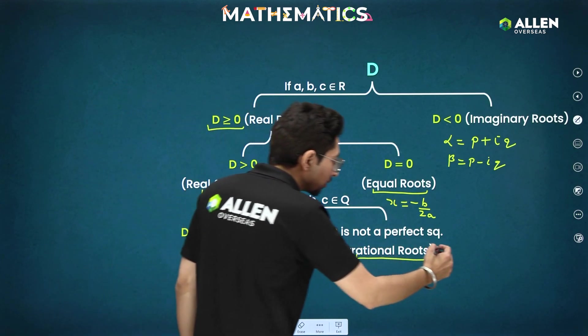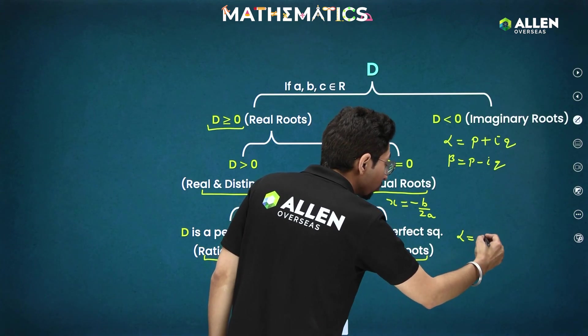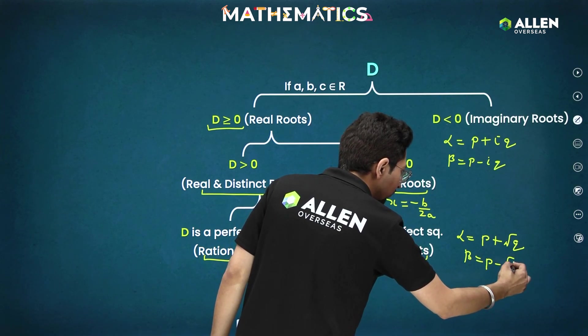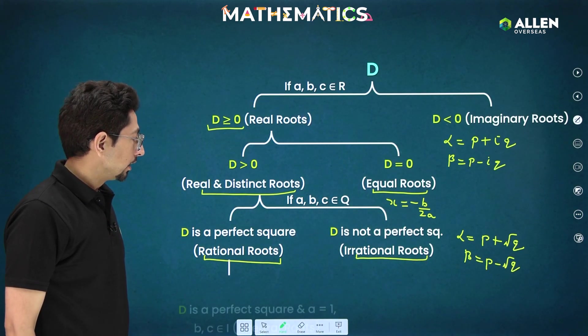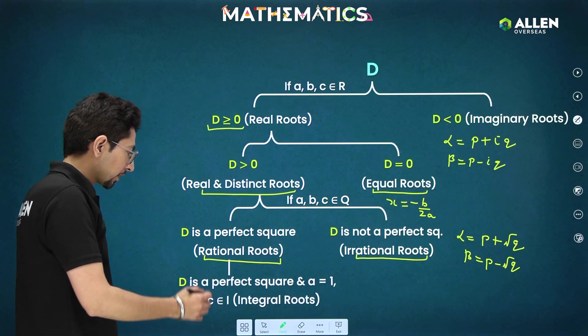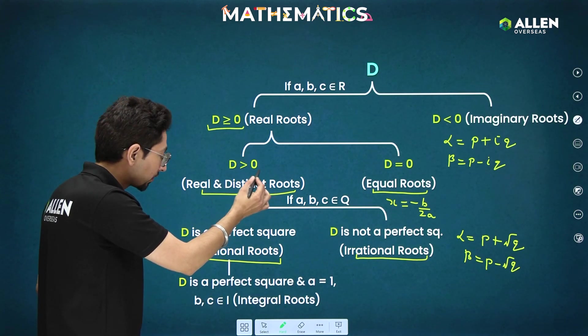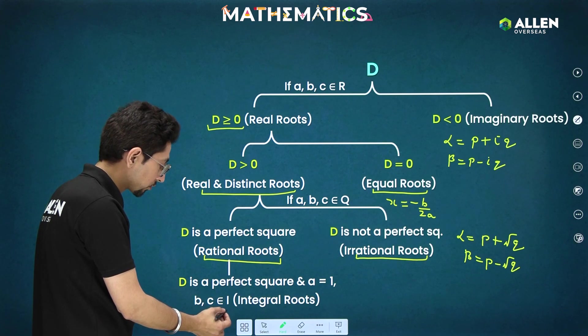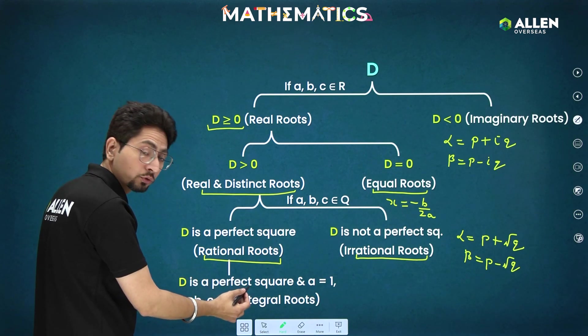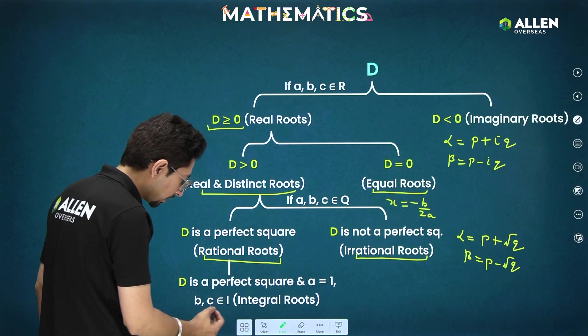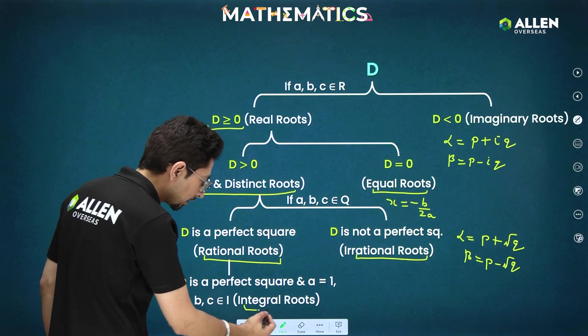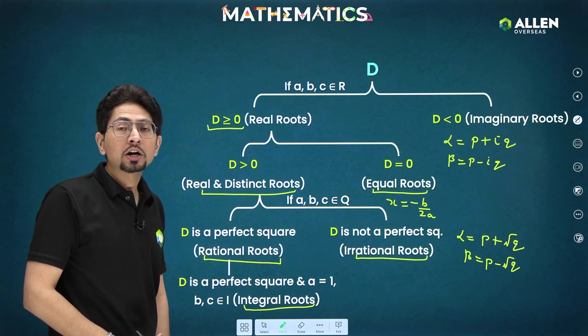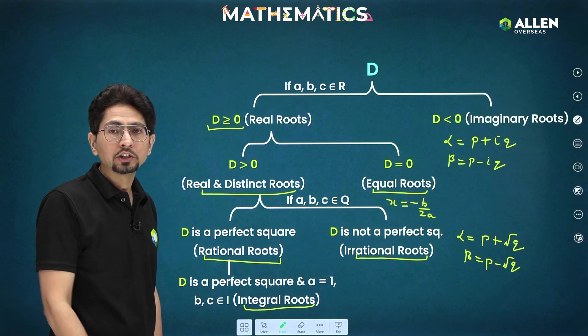Now again, irrational roots also occur in conjugate pair. In the pair of, let's say we have one root p + √q, another root will be p - √q. Very simple. Similarly, if we consider under this condition only, D is positive and a, b, c belong to rational numbers. Now, particular condition for integral roots, what is that? D must be perfect square and positive and a is 1 along with b, c belong to integers. Then you are getting integral roots. These are basic conditions, entire flowchart to describe how discriminant decides the nature of roots.